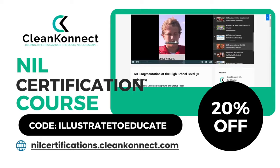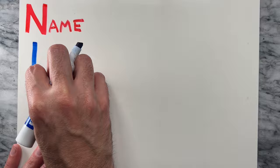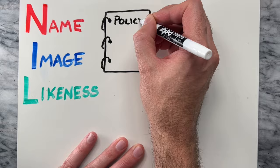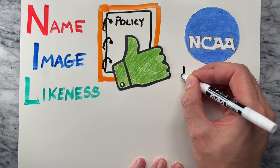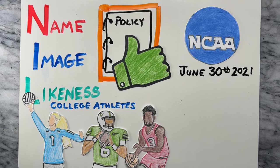NIL simply stands for Name, Image, and Likeness. NIL represents a groundbreaking policy approved by the NCAA Division I Board of Directors on June 30, 2021, that allowed college athletes nationwide, regardless of gender, sport, or level, to profit from their own name, image, and likeness.